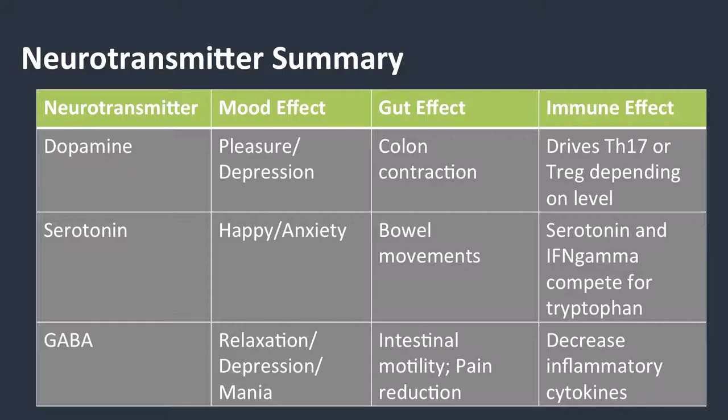And then GABA — GABA is our relaxation hormone, the inhibitory neurotransmitter. What GABA is doing for the gut is making it so it's not painful to poop. What it's doing for your immune system is decreasing inflammatory cytokines. Melatonin puts you to sleep and GABA keeps you asleep. GABA tends to be at its highest in the middle of the night, and that tends to be when you're resetting your inflammatory cytokines.